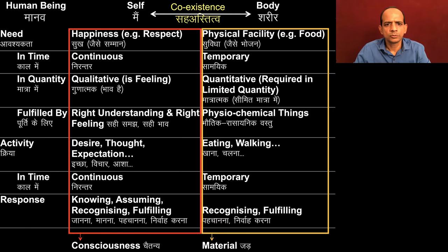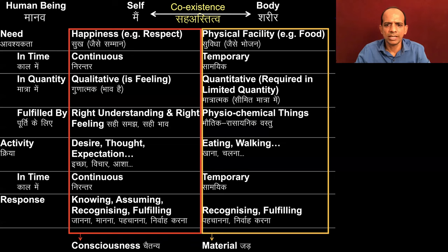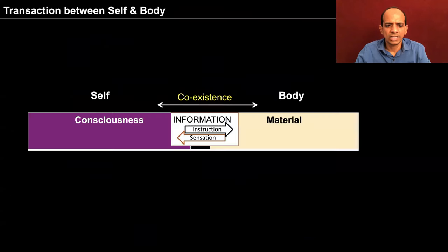Through the steps that we have been going through so far, it is now much more clear how the self is there, how the body is there, and how the two are transacting — how the two are there in coexistence. The sensations are there in the body and the feelings are there in the self, and how we are associating meaning to the sensation. This will give you better clarity of the existence of the self and the body as two distinct realities, and you could see how the information exchange is taking place between the self and the body.